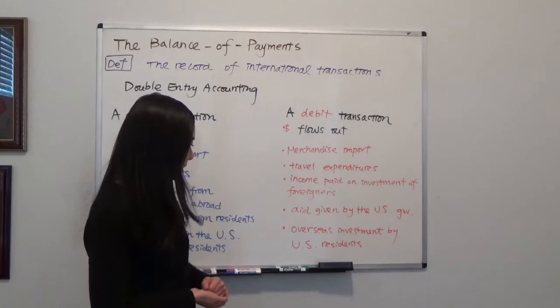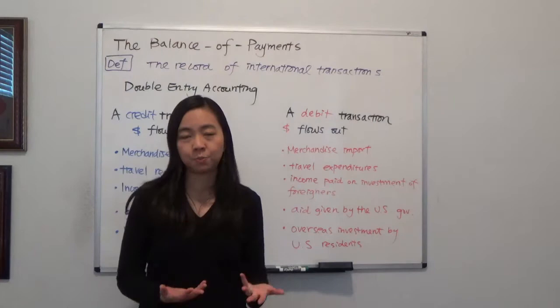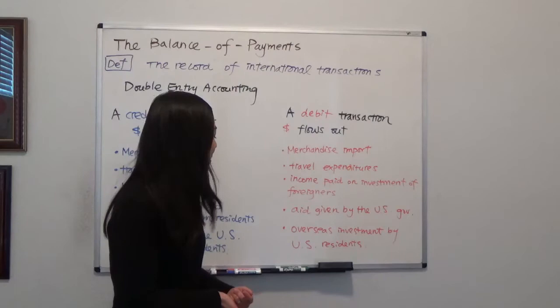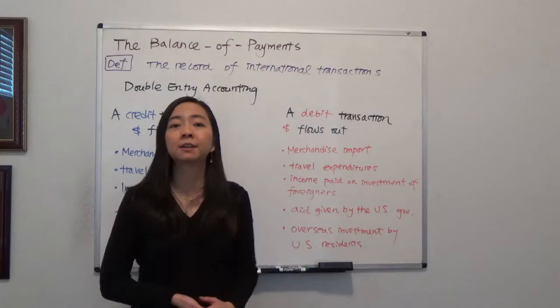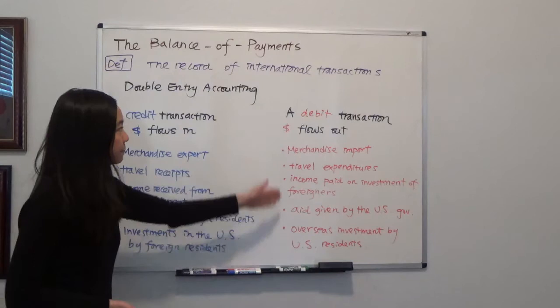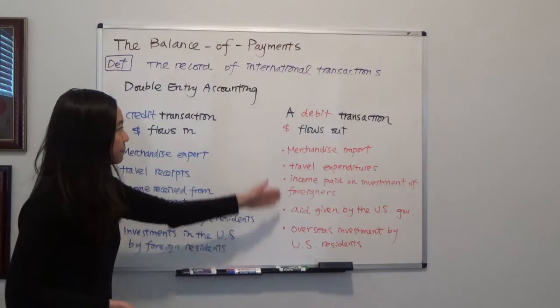Finally, overseas investment by US residents is also a debit transaction. For example, if a US firm is building an assembly factory in Osaka, Japan, the US resident has to pay for that factory, so money flows out from the US to Japan. These are some examples of credit and debit transactions. In the next video, I'm going to talk about the difference between the current account and the capital and financial account. I hope this helps and I'll see you next time.